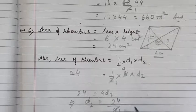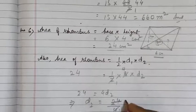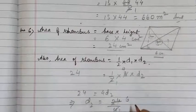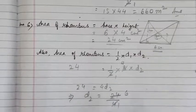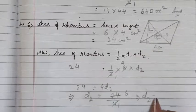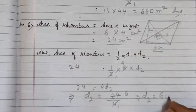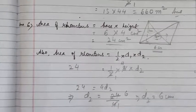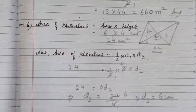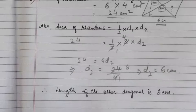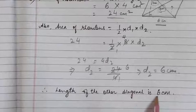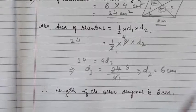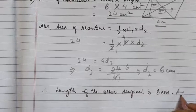4 × 6 = 24, so we get d2 = 6 cm. Therefore the length of the other diagonal is 6 cm, and this is the answer.